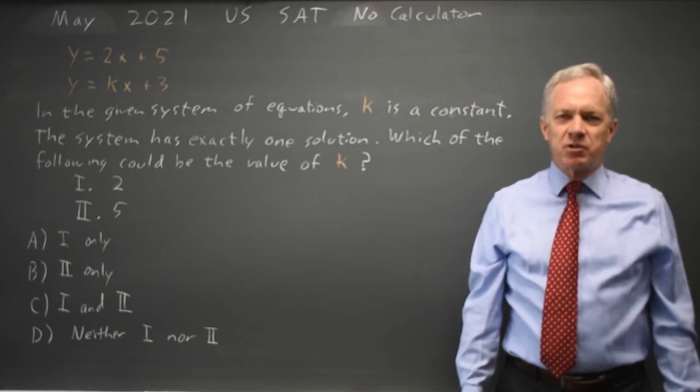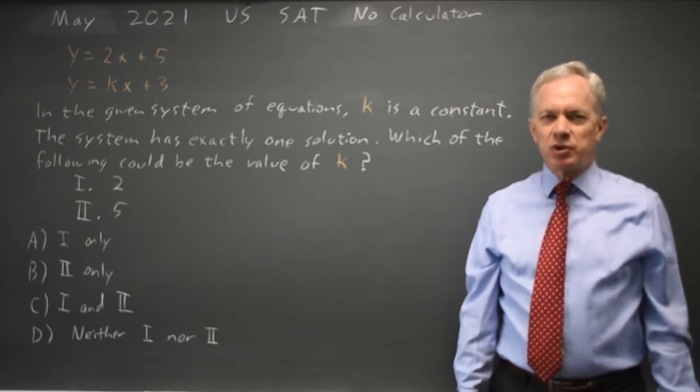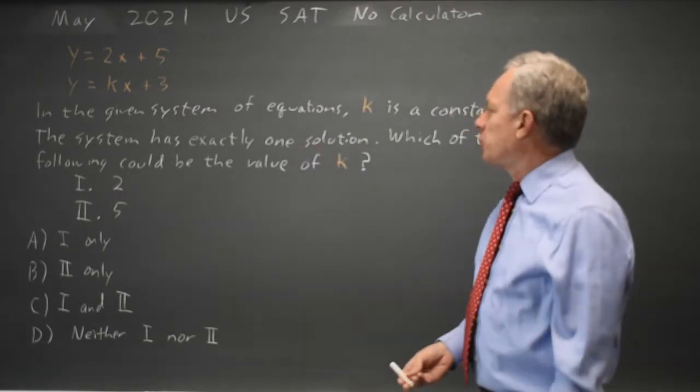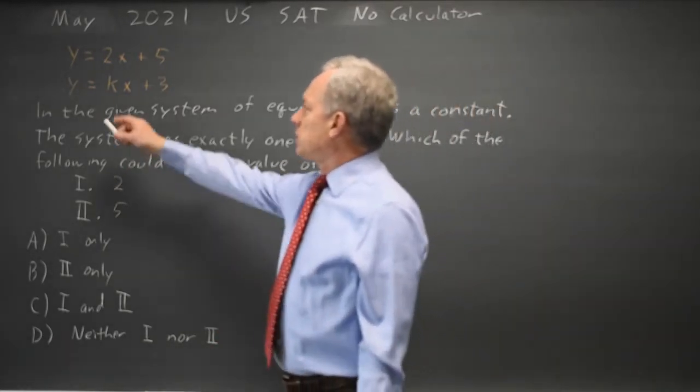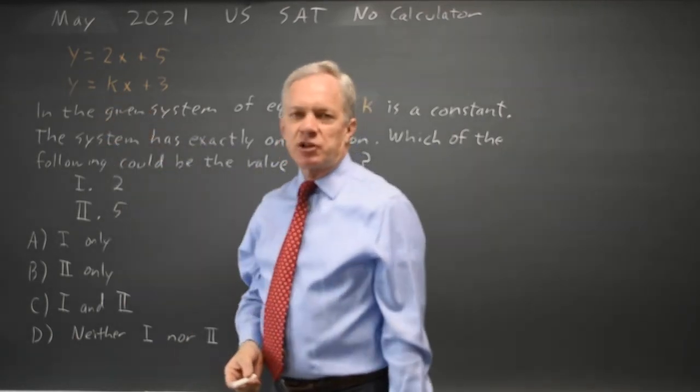I'm Dr. Rodger and this question is from the May 2021 U.S. SAT non-calculator. College Board is asking about a system of equations with exactly one solution. And they ask, in the equation y equals kx plus 3, which of these two is a possible value for k?